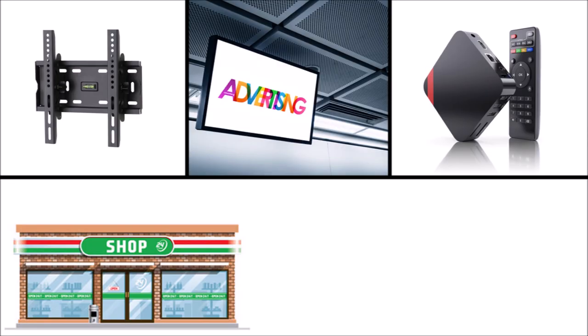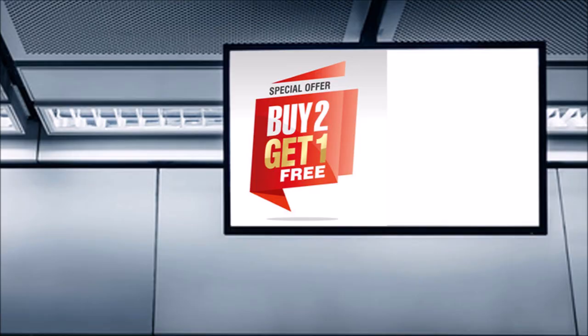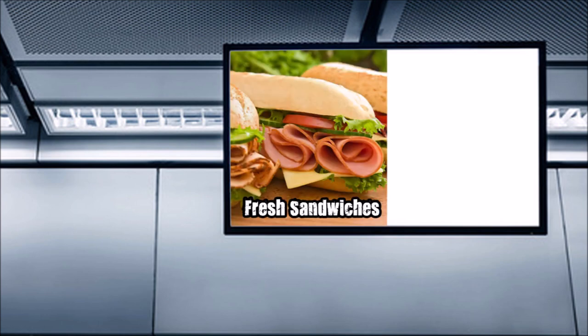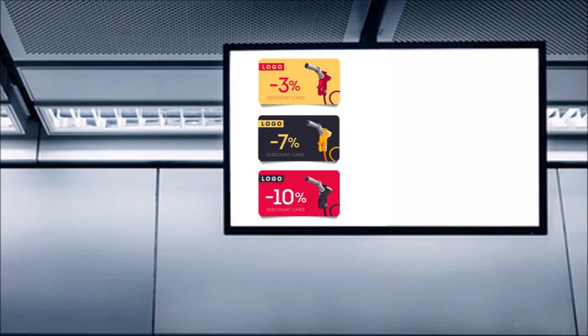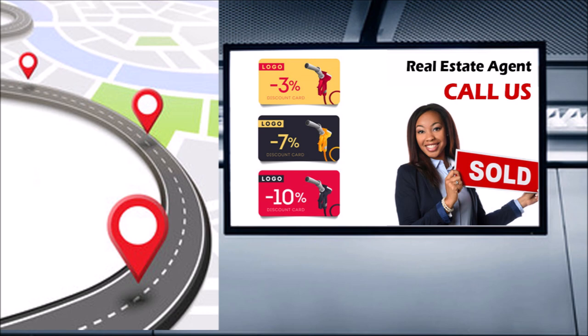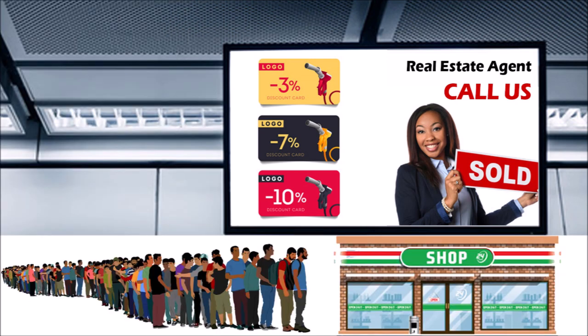The convenience store owner would have half the screen dedicated to his own content, such as his specials, sodas, coffee, sandwiches, snacks, and anything else he wished to promote. Ed would then find businesses within the proximity of the convenience store who understood the benefit of placing ads on the other half of the digital ad screen, to be viewed by hundreds of clients walking in and out of the convenience store on a daily basis.